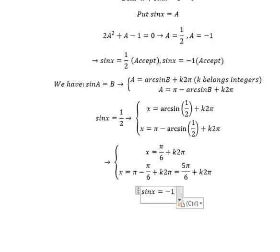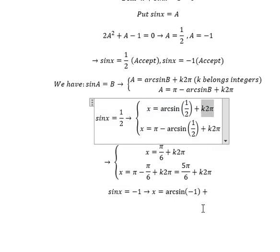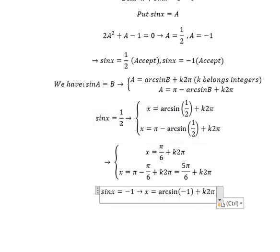For sin(x) equals negative 1, we have x equals negative π/2 plus k times 2π.